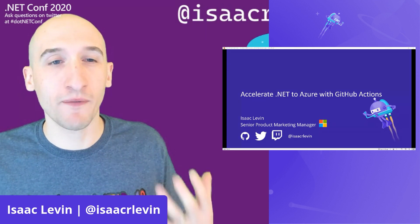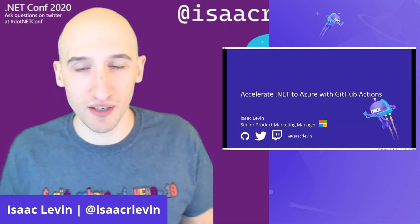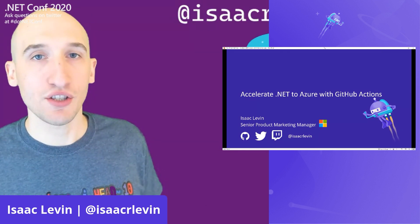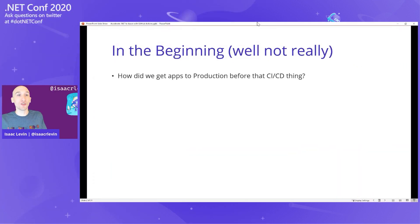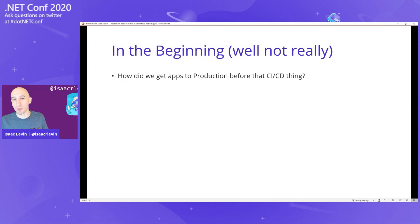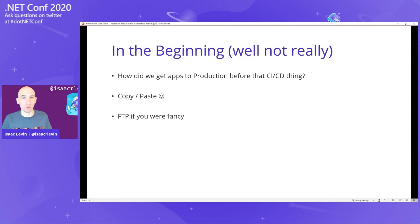Before we start talking about all the cool things with .NET and Actions and Azure, I wanted to do a little bit of a history lesson. How did we get apps to production before that whole CI/CD thing became the thing you had to do? I asked a Twitter question a few days ago, and some of the results were pretty fun. Everybody used to copy and paste, or if you were fancy, you would FTP, or maybe build some really convoluted solution doing scripting and deploying using SSH.